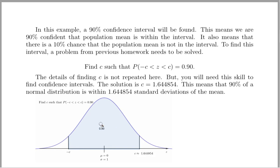We wanted 90% of the population to be between minus C and C in a standard normal distribution. That turns out to be that this C is going to need to be about 1.644854. If you've forgotten how to find that value, you'll need to relearn it because we'll use it often in this chapter.